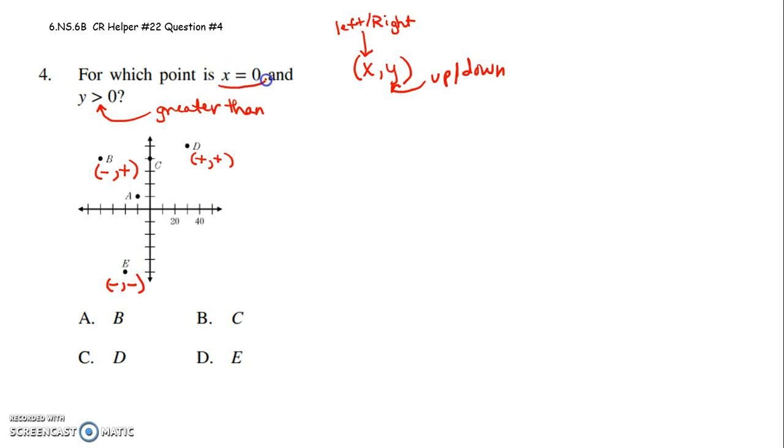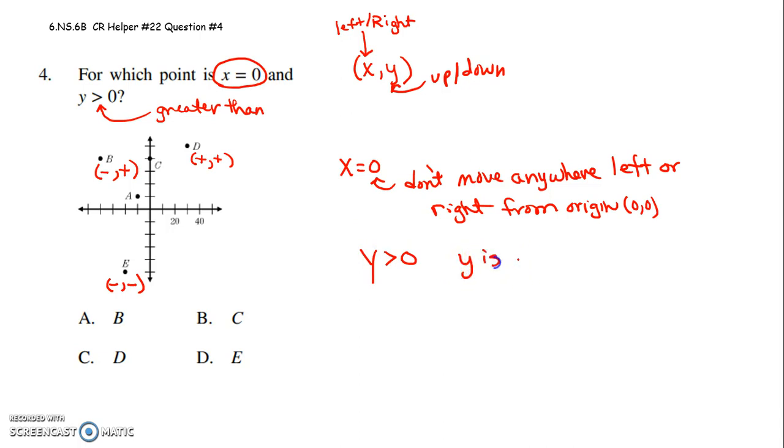I need x to be 0. So if x is 0, don't move anywhere left or right from the origin. The origin is the middle point, that's 0, 0. And y greater than 0 says y is positive, which means move up.